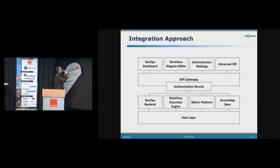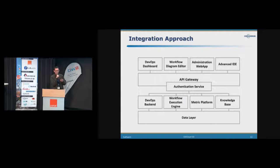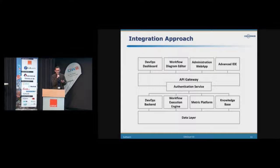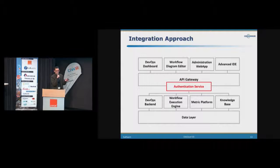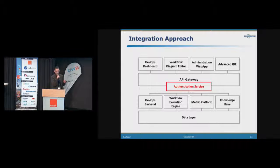Here is an overview of the different components of the CrossMiner project. On the bottom we have the different backend components, and on the top we have the different layers — the API gateway and the authentication service — which were added to the platform during the refactoring phase.